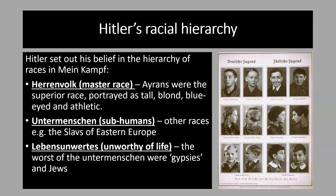Other races, such as the Slavs of Eastern Europe, were deemed to be Untermenschen, which means subhuman. For Hitler, the worst of the Untermenschen were Roma gypsies and Jews. Later, Hitler deemed them lebensunwert, which means unworthy of life.